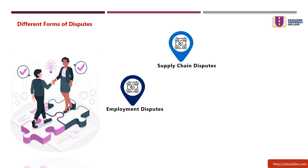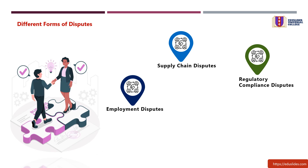Seven: supply chain disputes — conflicts within the supply chain, such as disputes with suppliers, distributors, or logistics partners. Eight: regulatory compliance disputes — conflicts arising from non-compliance with industry regulations or legal requirements. Nine: customer disputes — conflicts involving customer complaints, dissatisfaction, or disputes over products or services.